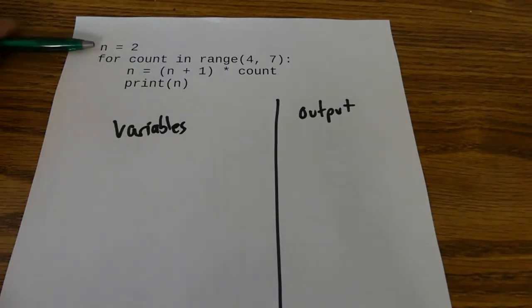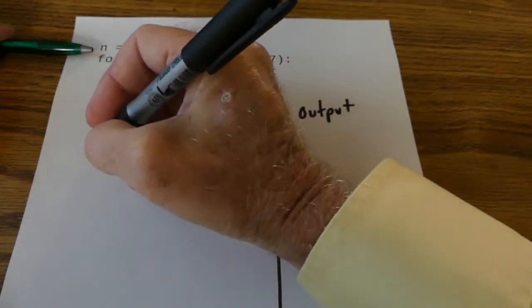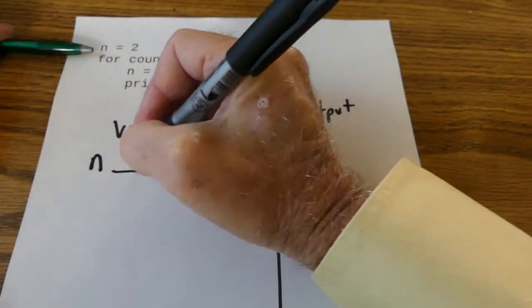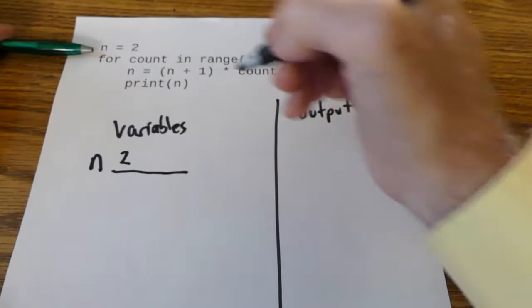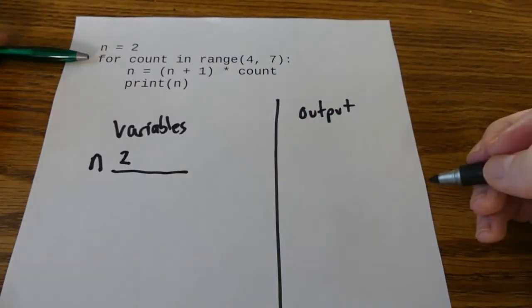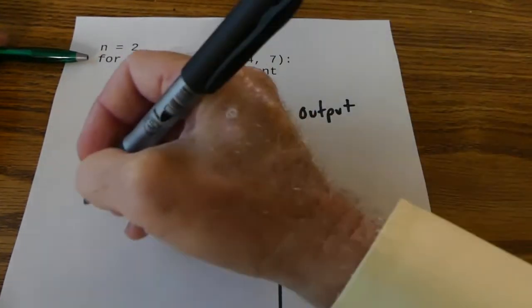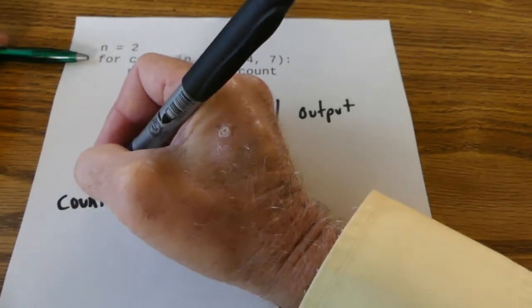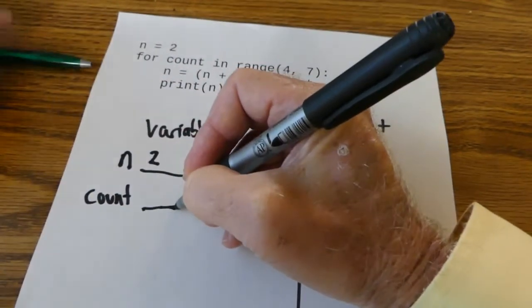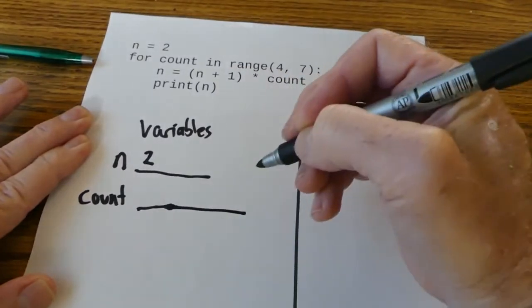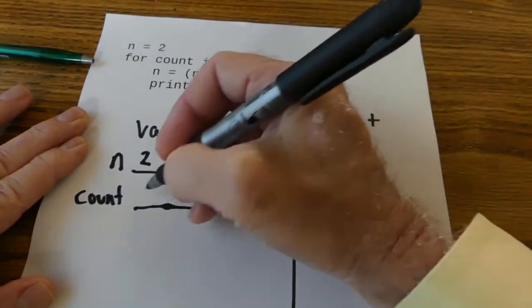So let's start off with this first statement n equals 2. So I'm going to open up a new line here n and I'm going to put a 2 there. Now I go on to the for loop. I have my counter variable which is count. I'm going to make a new line for that and it starts off as 4.